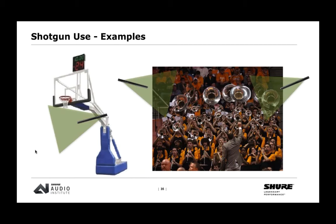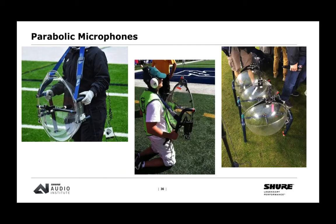For capturing a pep band at NCAA basketball, if there's the luxury, large diaphragm condenser microphones are set up in a stereo pattern in front of the band. Sometimes shotgun microphones are mounted further away to avoid blocking lines of sight — even on the back of the basketball backboard itself since the band is often at one end of the court. For really far and distant sounds, a parabolic microphone — sometimes called a fishbowl — concentrates energy toward a focal point where the microphone is placed, allowing capture from much farther distances.